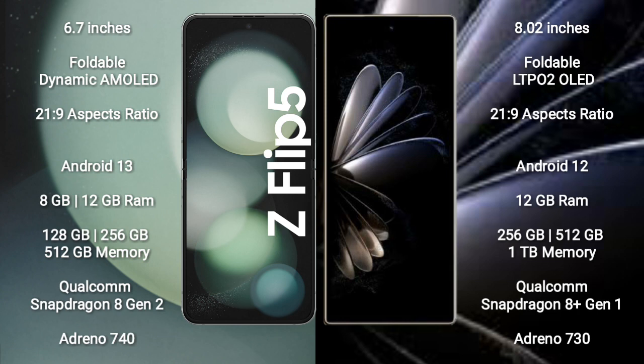Samsung Galaxy Z Flip 5 comes with 8GB or 12GB RAM and 128GB, 256GB, or 512GB internal storage, powered by the Qualcomm Snapdragon 8 Gen 2 processor with Adreno 740 GPU.